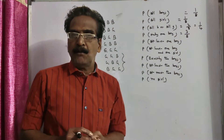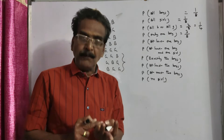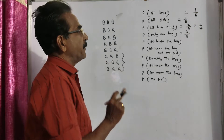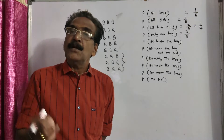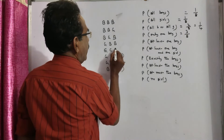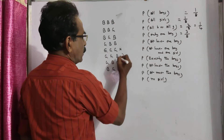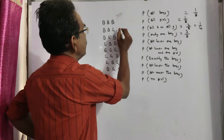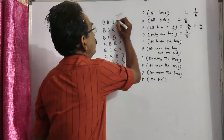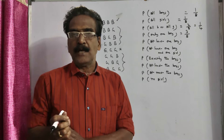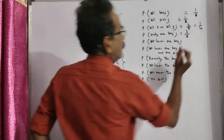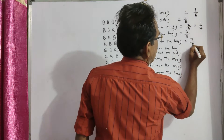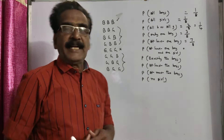Probability of at least one boy: at least one boy means one boy, two boys, or three boys — that means there should be no all-girls outcome. Except the one all-girls outcome, in the remaining seven outcomes you can find at least one boy. In three cases you have one boy, in three cases you have two boys, in one case you have three boys. So favorable outcomes are seven, total number of outcomes eight, giving probability seven by eight.